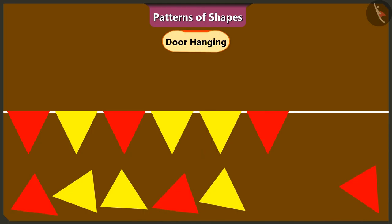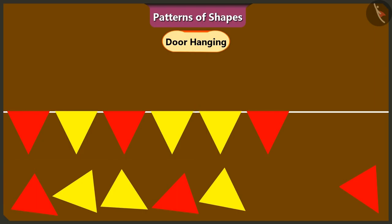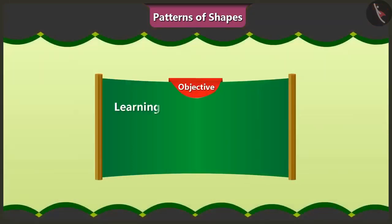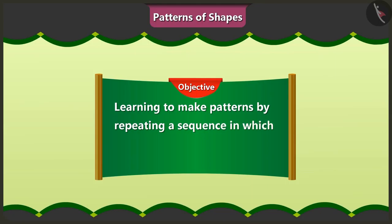It's looking really good. Oh, Binny, look at this toran carefully. The triangle shapes have been put together in a special pattern. These are patterns of shapes. In today's video, we will learn how to make patterns by repeating a special sequence in which different shapes are organized.